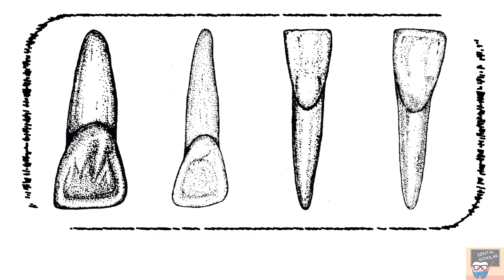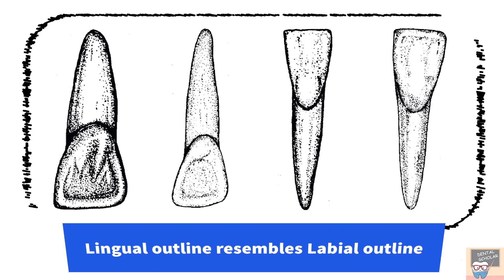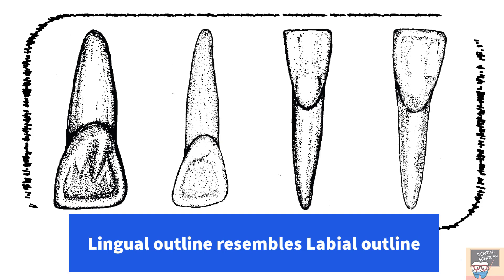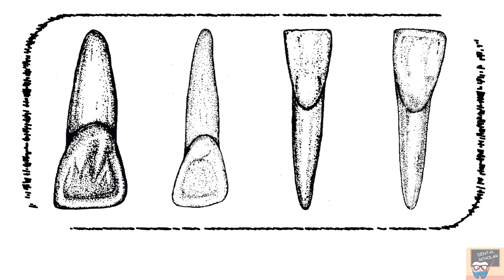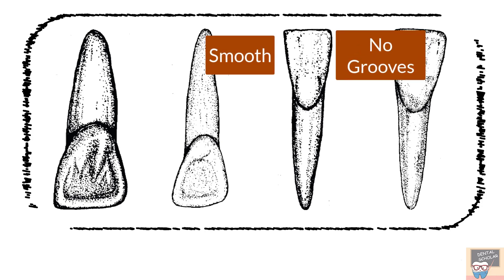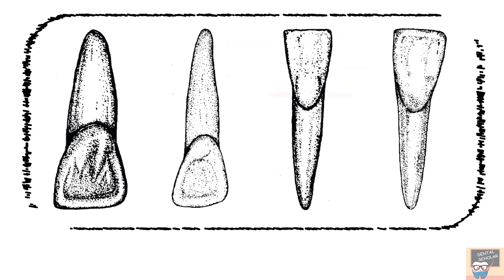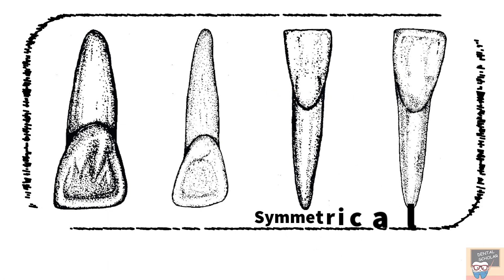Now let's see the mandibular incisors. As with maxillary incisors, the outline form from the lingual view appears the same as in the labial view. In the third tooth, the lingual surface is very smooth, there are no supplemental grooves, the lingual fossa is almost insignificant, and the cingulum is placed in the center of the tooth mesiodistally. So the tooth basically appears very symmetrical. These features indicate that it is a mandibular central incisor.